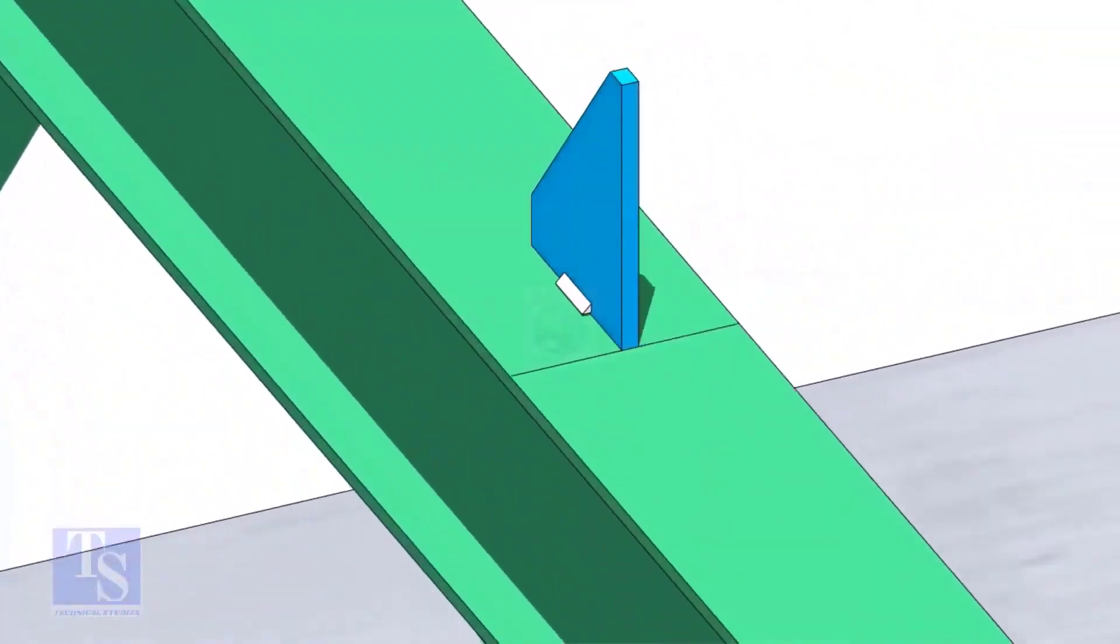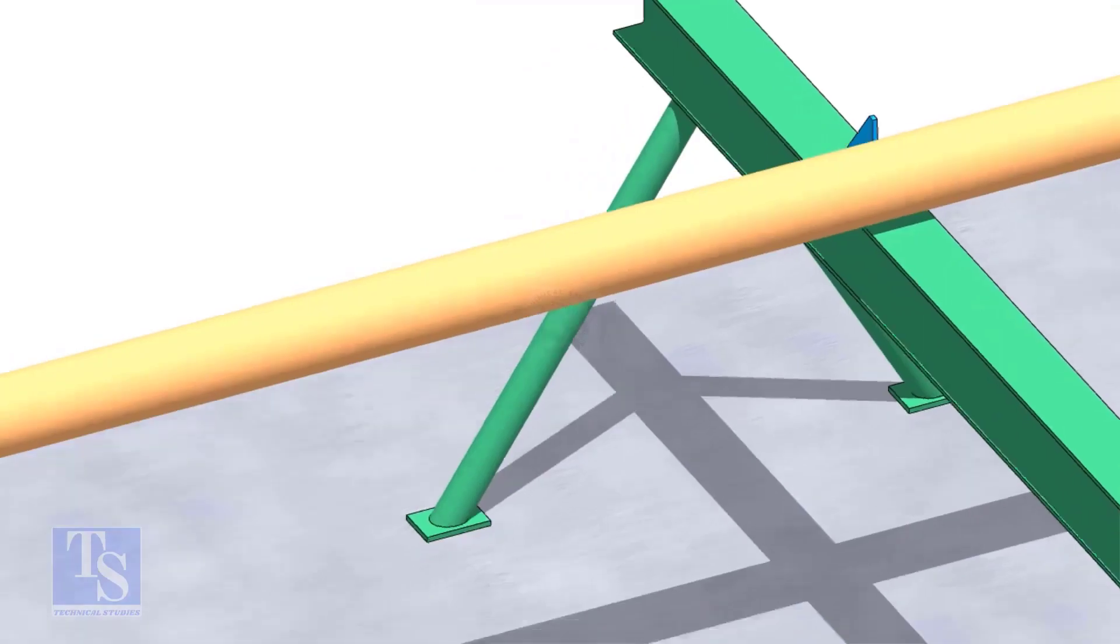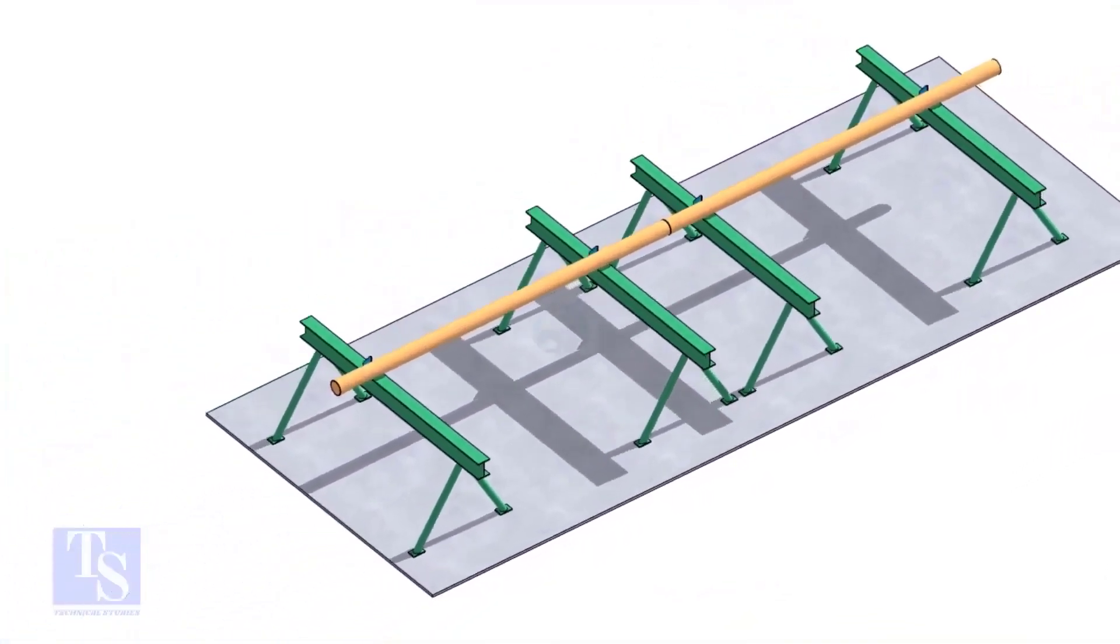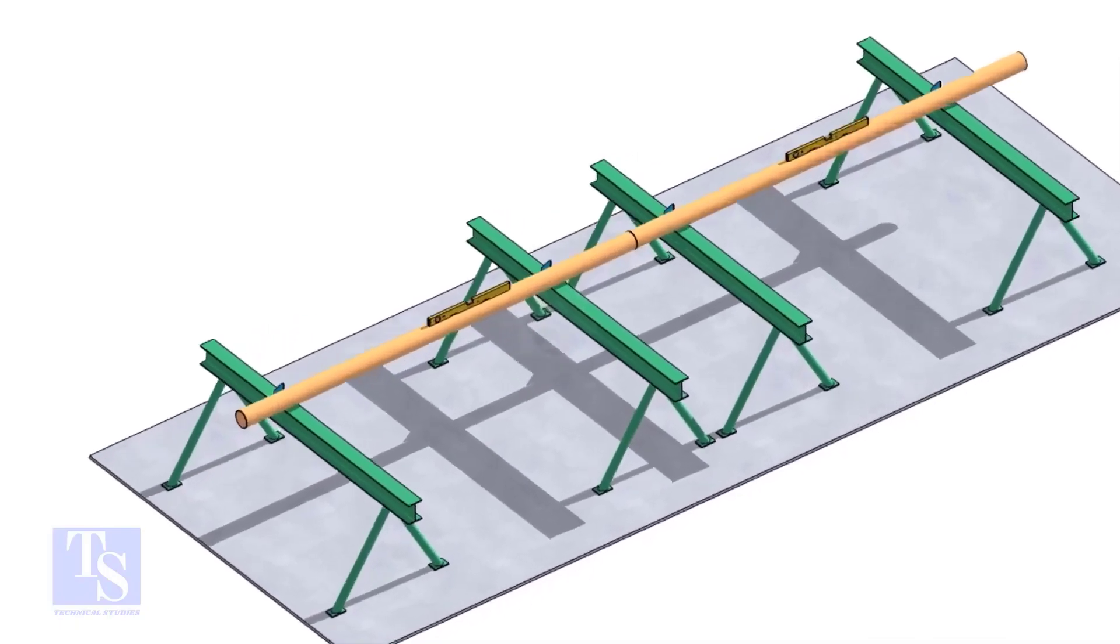Put the pipes on the stands, touching the stopper plates, as shown. The joint shall be in between the supports. Now the pipes are already straight, horizontally and vertically.